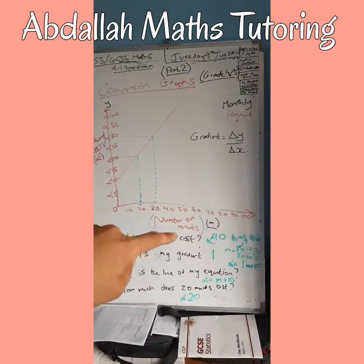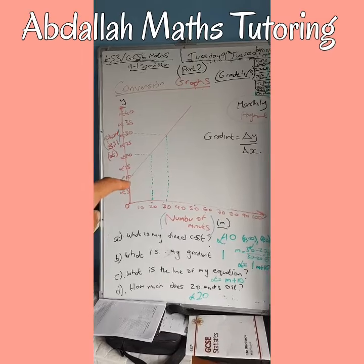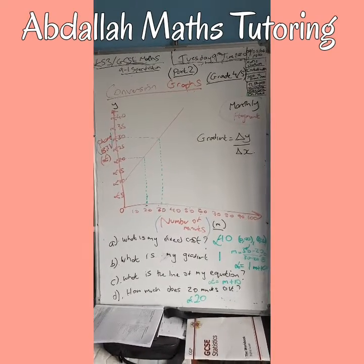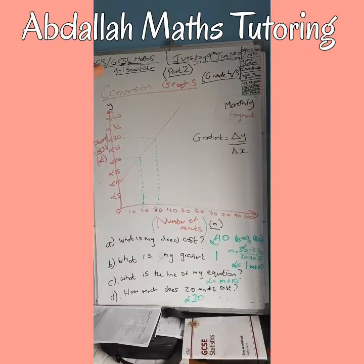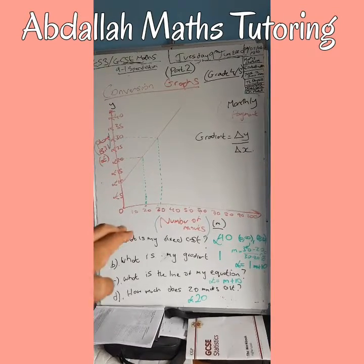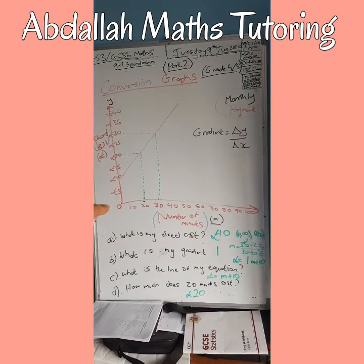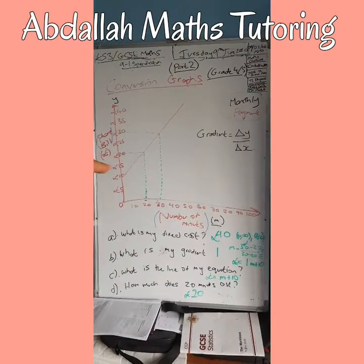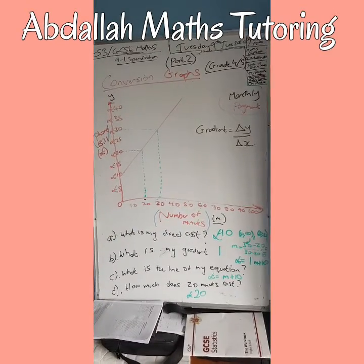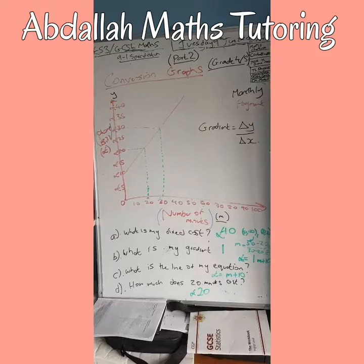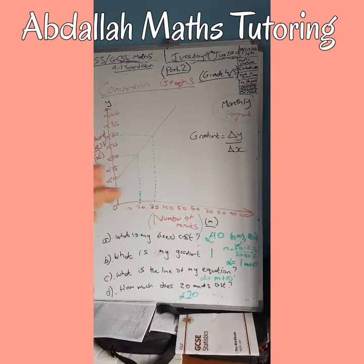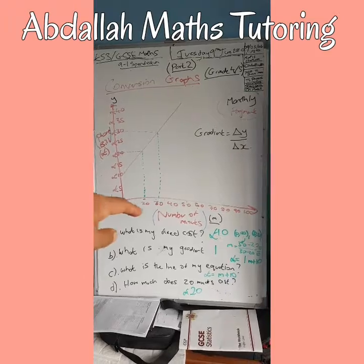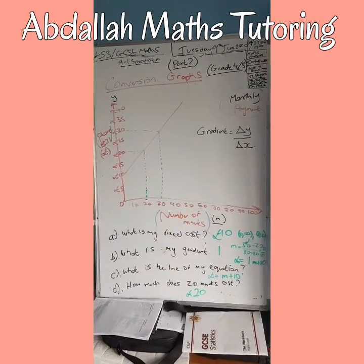Part A: what is my fixed cost? An important point is that not all conversion graphs start from zero — they don't always start from the origin; they can start from anywhere on the graph. Here the graph starts at £10, so the fixed cost is £10. That means irrespective of whatever minutes I use, it will cost me £10 regardless.